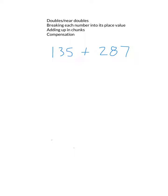So let's first look at breaking each number into its place value. What's 100 plus 200? 300. What's 30 plus 80? 110. What's 5 plus 7? 12. So if we add them up, we're left with 422.